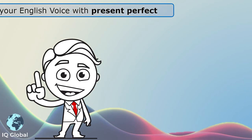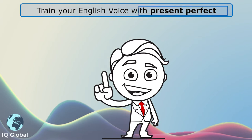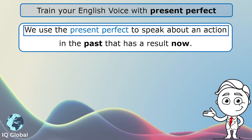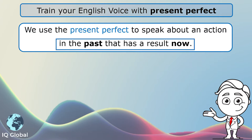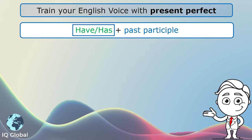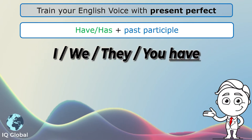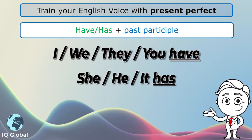Hello, today we are going to train your English voice with present perfect. We use the present perfect to speak about an action in the past that has a result now. So we use have or has plus past participle. Remember that we use have when we talk about I, we, they, or you.